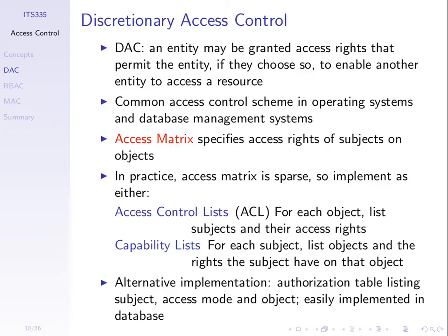We have entities referred to as subjects. A subject wants to access some resource or object. An access control mechanism will specify or control what subjects can access what objects. The examples we'll use are mainly subjects as users—humans, or maybe some software process on behalf of users—and the object is a file. But it can be any resource available in a computer system; it's usually easy to think of files and give examples of file-based access control.